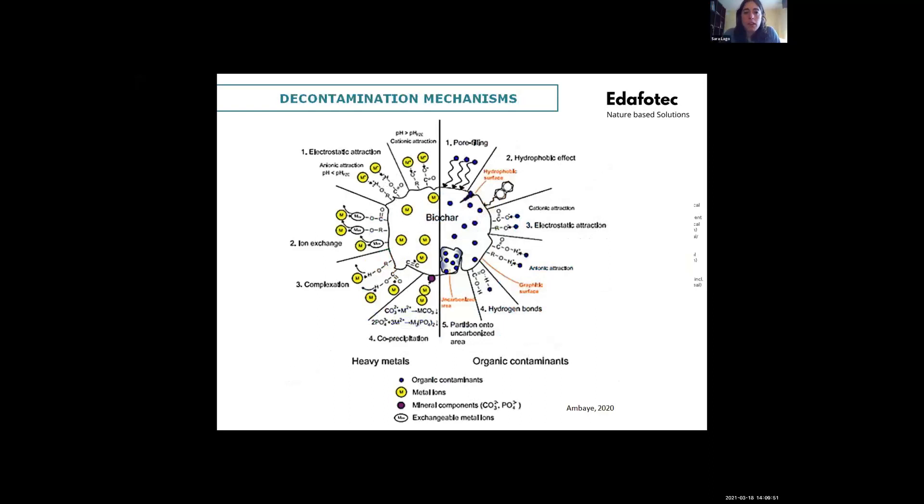In biochar, the contaminants are absorbed by different mechanisms and this mechanism differs depending on whether it is a heavy metal or an organic contaminant. Heavy metals absorption occurs mainly by electrostatic attraction, ion exchange and precipitation. Organic contaminants are mostly absorbed by biochar via van der Waals forces, hydrophobic interactions and hydrogen bonds.